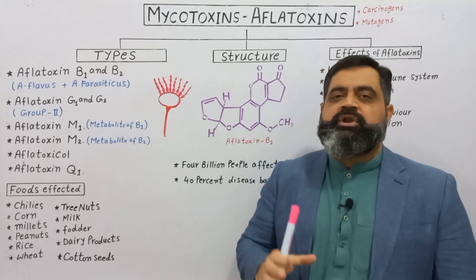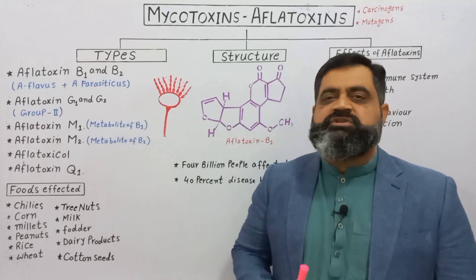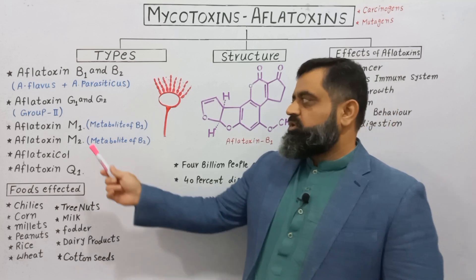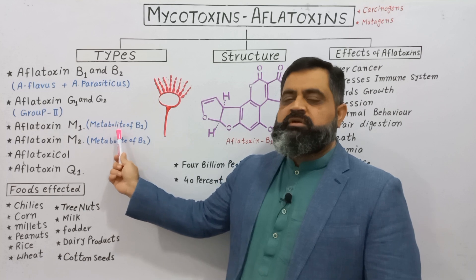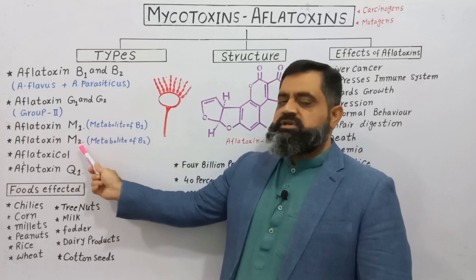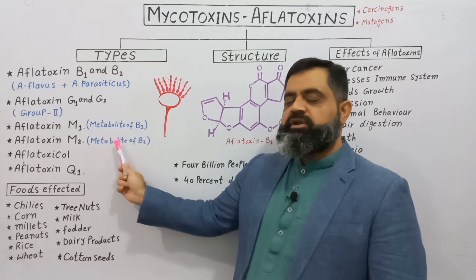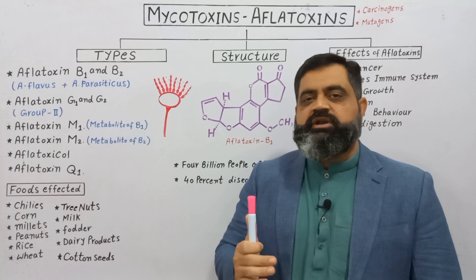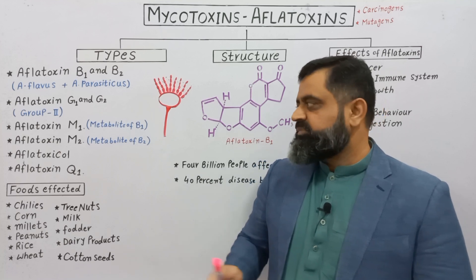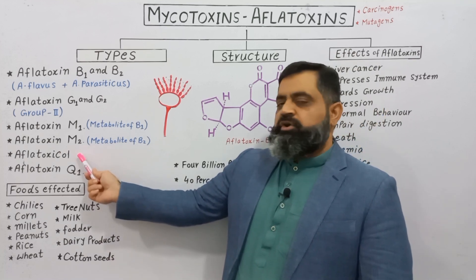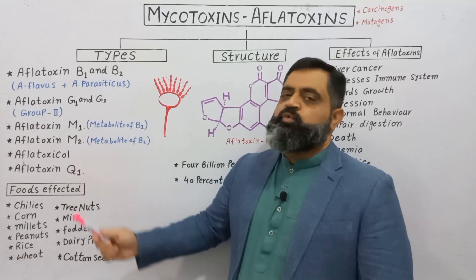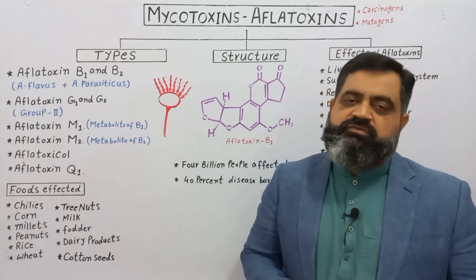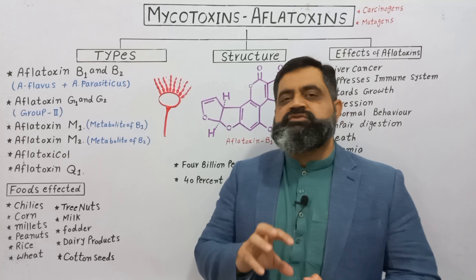Aflatoxin M1 is a metabolite of aflatoxin B1, and aflatoxin M2 is a metabolite of B2, both produced during the metabolism of aflatoxin B1 and B2 inside a living organism. Aflatoxin Q1 is also an important aflatoxin present in our foodstuff.